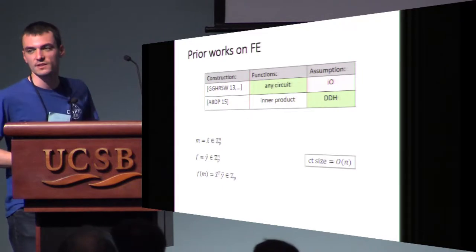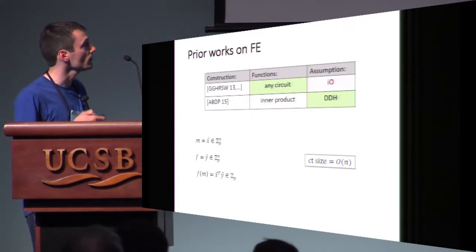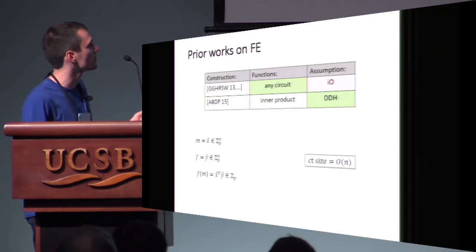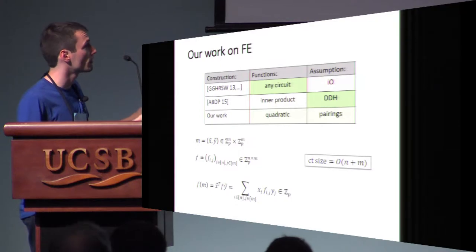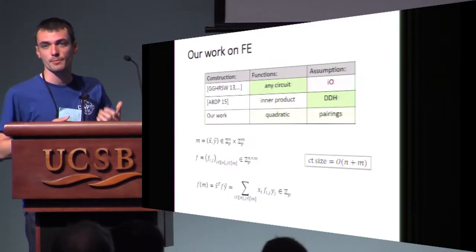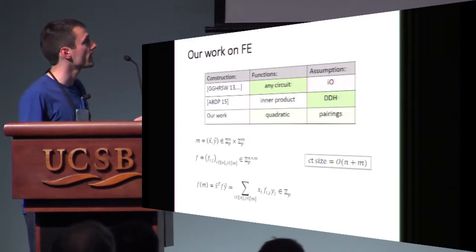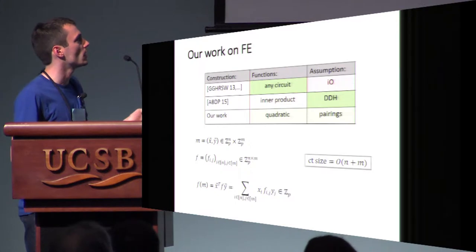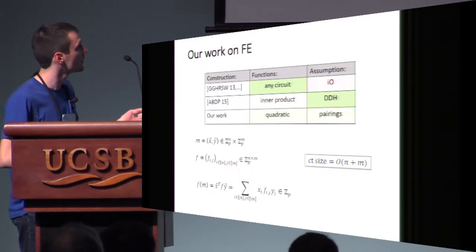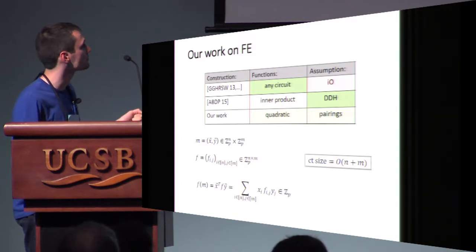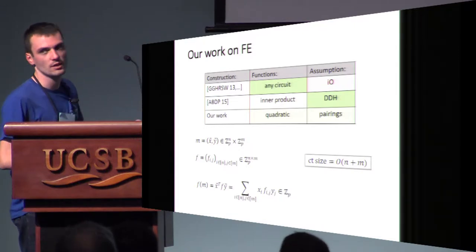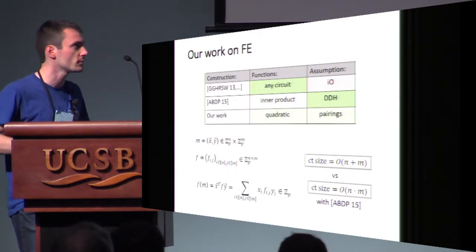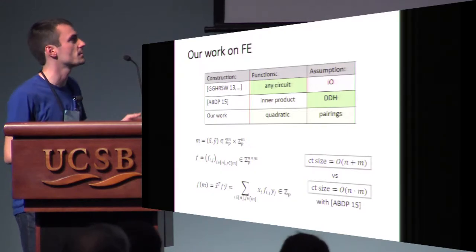The ciphertext size is linear — a number of group elements linear in the dimension of M. Following this bottom-up approach, we tried to build, from standard assumptions, FE for a slightly richer class of functions. What we did was build FE for quadratic functions. The message is now a pair of vectors X and Y, and the function is a bilinear map, so F of M gives you X^T F Y. The important thing is that the ciphertext size is linear in N plus M. You could already do quadratic functions from inner product by expressing a bilinear map as a huge vector, but that would blow up the size to N times M. So this is really an efficiency improvement.